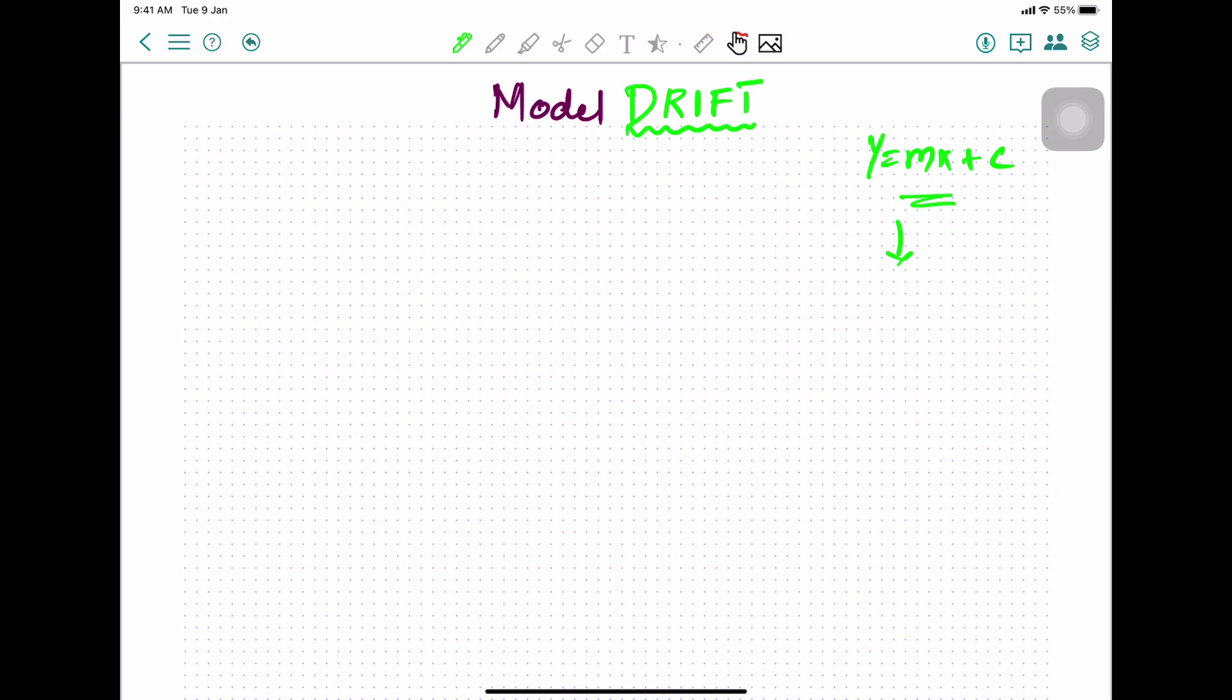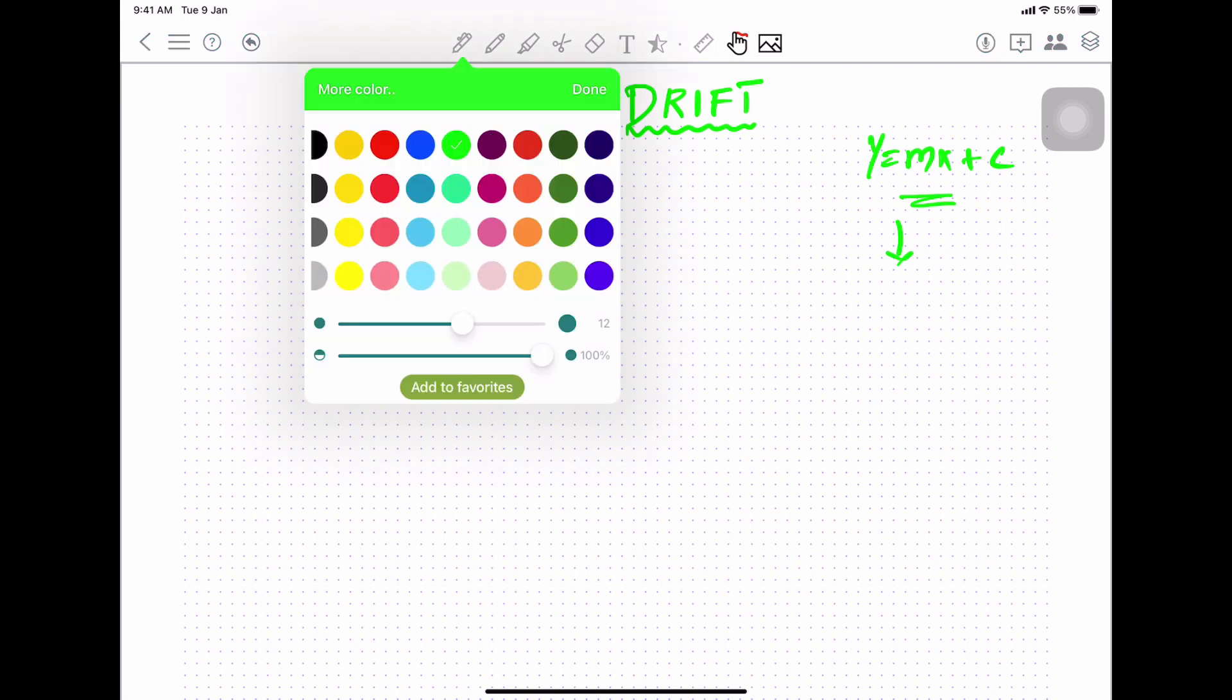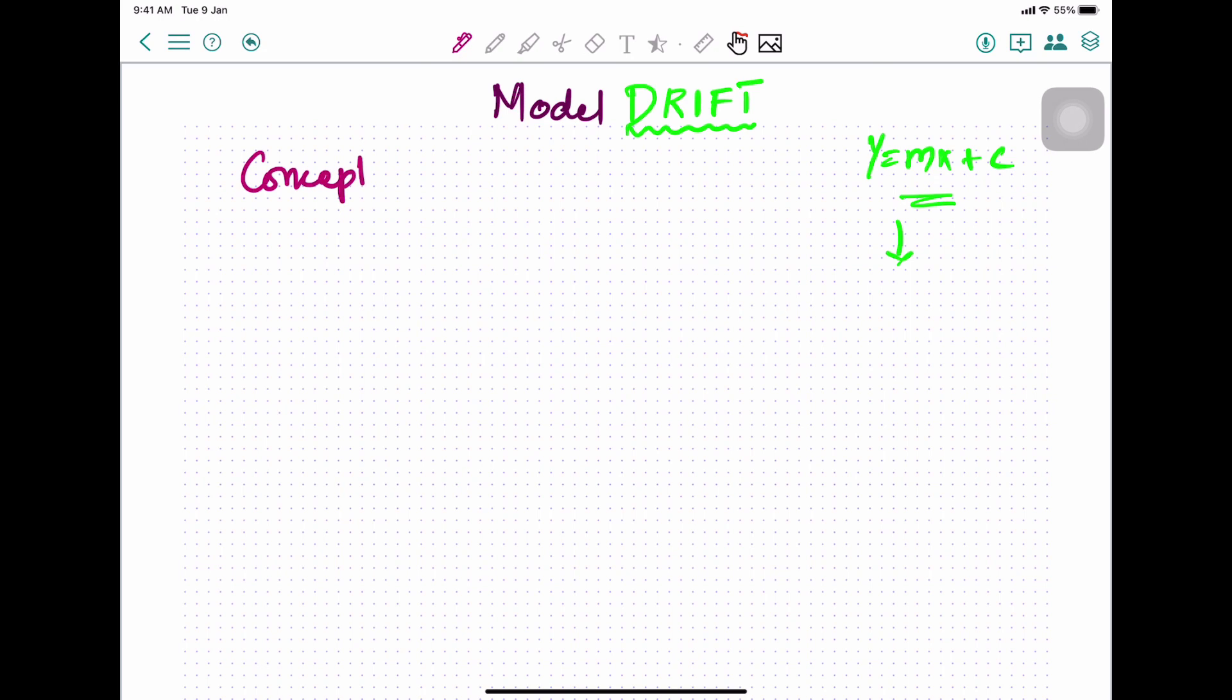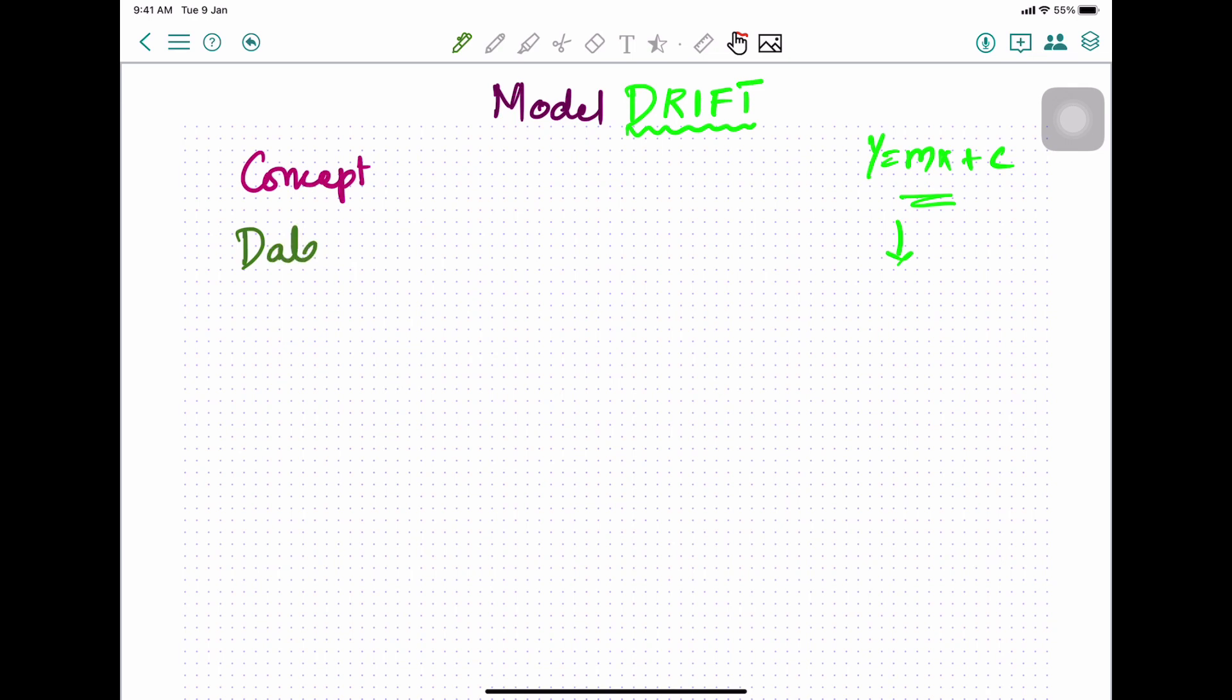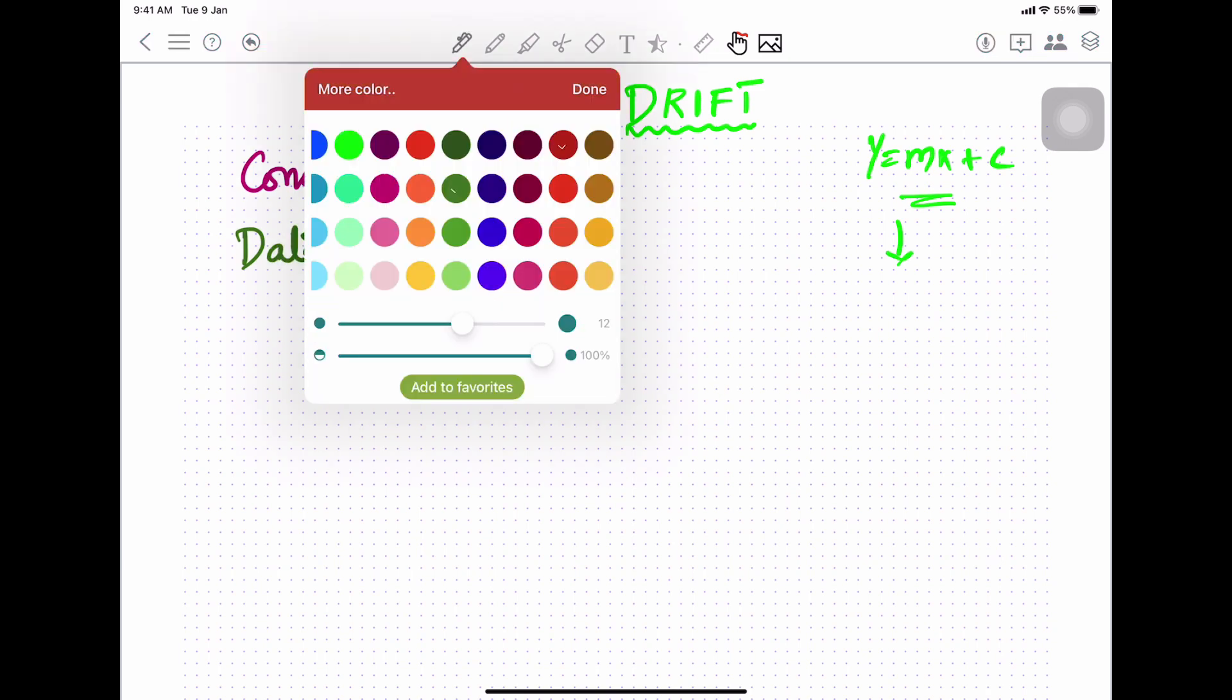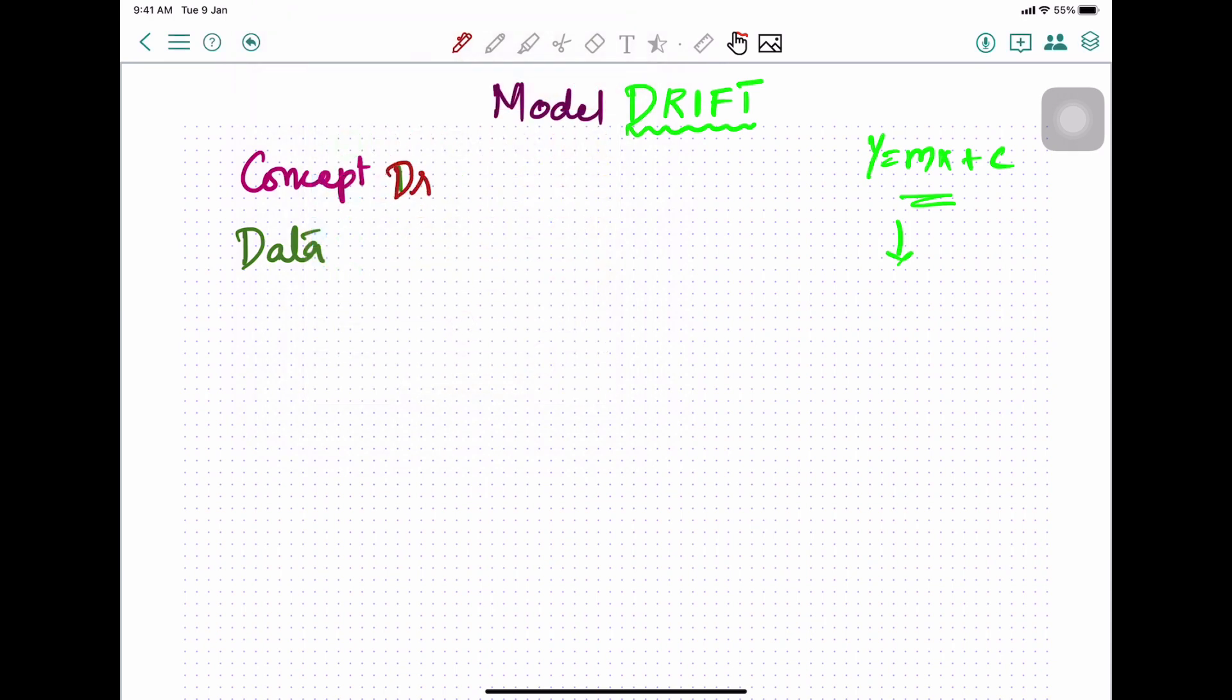Now what is model drift? Model drift can be of two big types. If you want to categorize it into two large categories, the first one is called a concept drift and the second one is called a data drift.